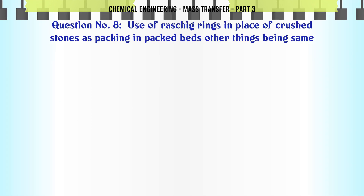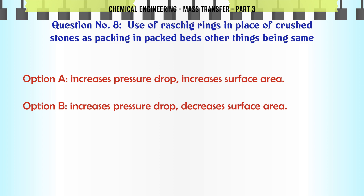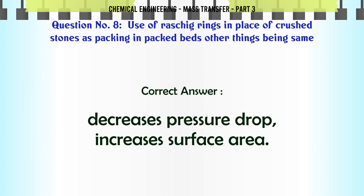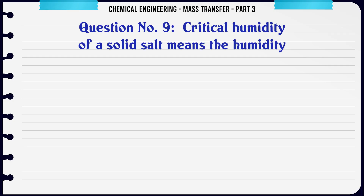Use of Raschig rings in place of crushed stones as packing in packed beds, other things being the same: A) increases pressure drop, increases surface area, B) increases pressure drop, decreases surface area, C) decreases pressure drop, increases surface area, D) decreases pressure drop, decreases surface area. The correct answer is: decreases pressure drop, increases surface area.